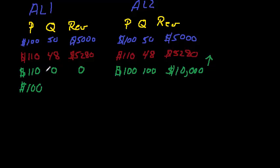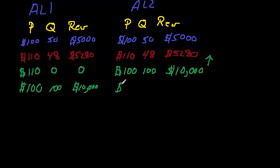If airline one was the one that didn't increase price, they would get all of the seats, all of the demand, and all of the revenue. And for the airline that did initiate the fare increase — let's say it was airline two — their demand would go down to zero and their revenue would be zero.